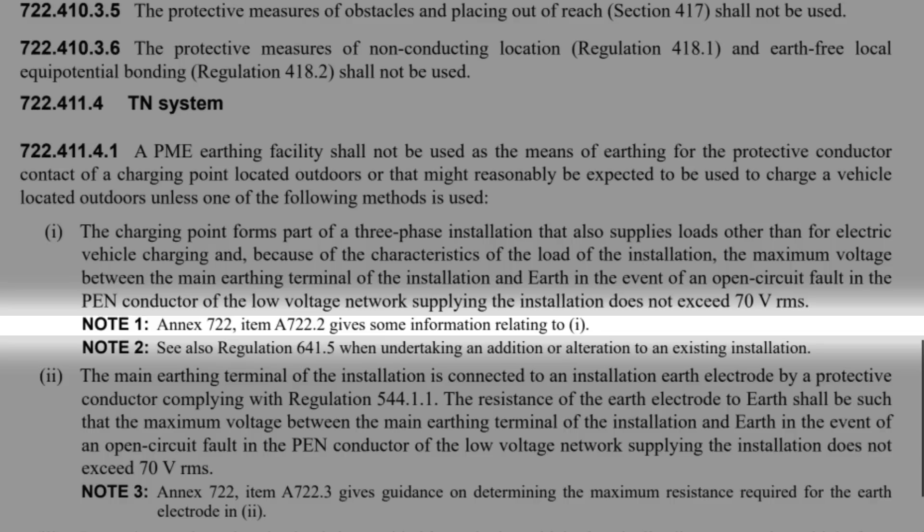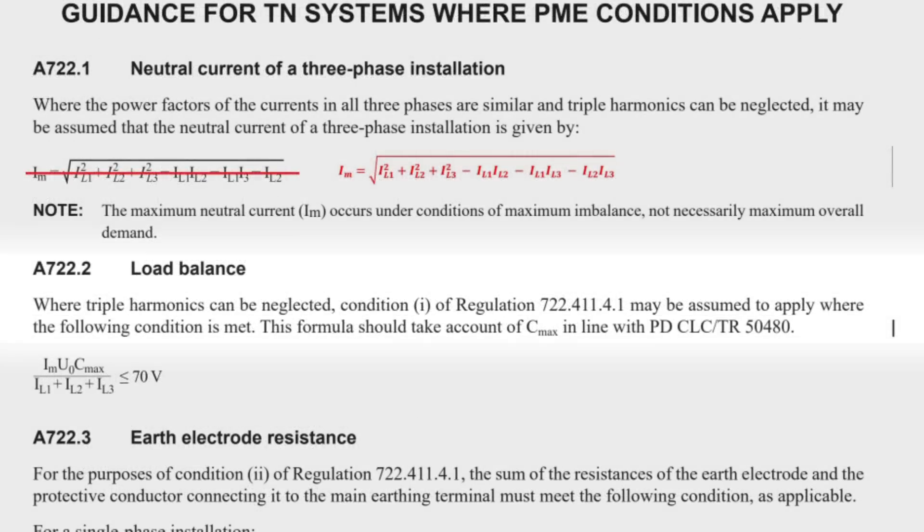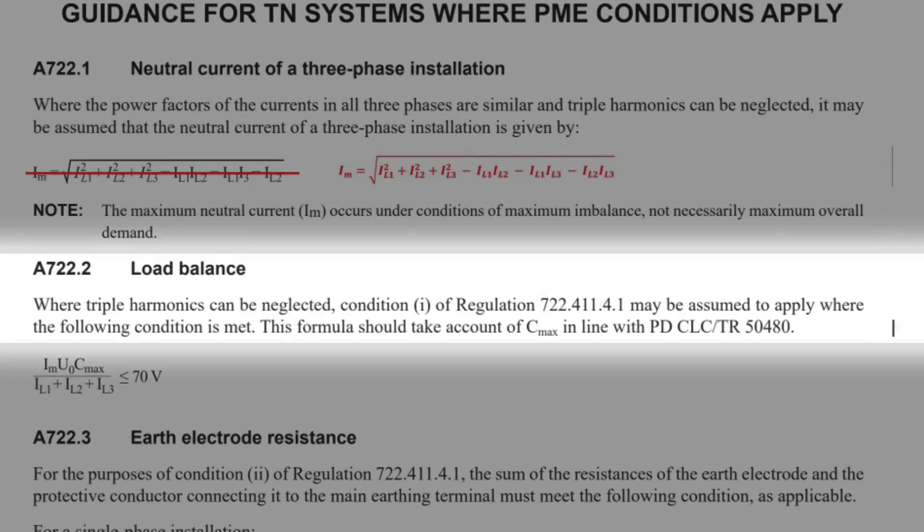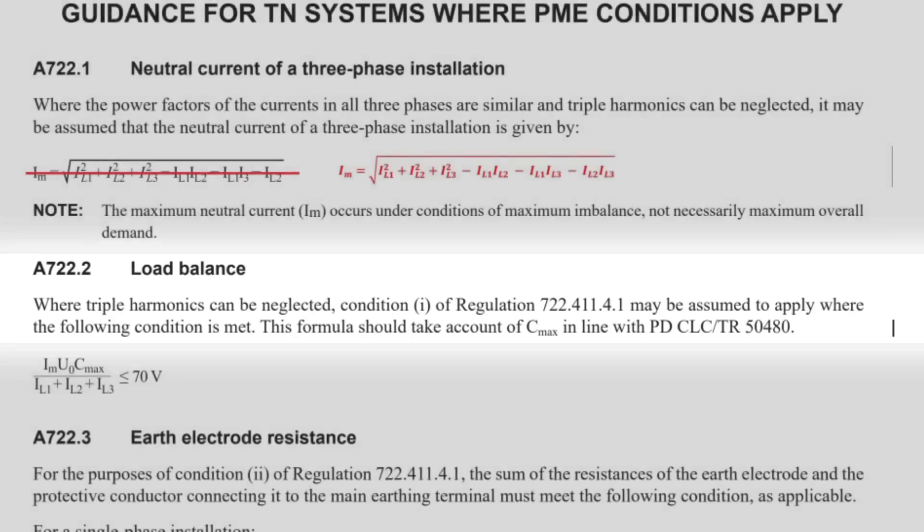Well note 1 to that indent tells us that Annex 722 item A722.2 gives some information relating to 1. So turning to that reference we find that where triple harmonics can be neglected, condition 1 of regulation 722.411.4.1, which is the reg we're reading at the moment, may be assumed to apply where the following condition is met. This formula should take account of Cmax in line with PD CLC TR 50480. There then follows a rather intimidating looking formula.